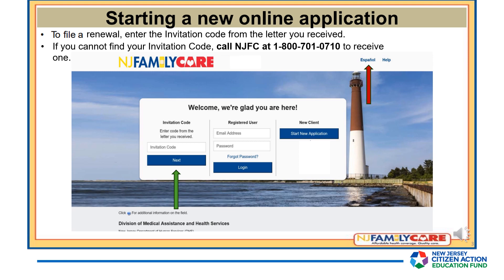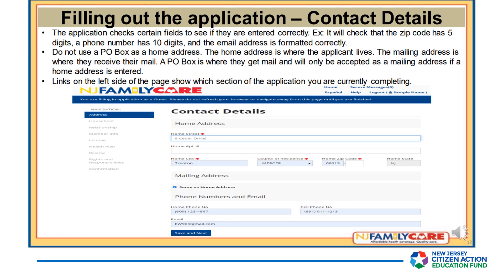Once you hit Next, you will need to confirm a date of birth and social security number if applicable. When filling out the application contact details, the application checks to see that certain fields are entered correctly. For example, it will check that the zip code has five digits, a phone number has 10 digits, and the email address is formatted correctly.